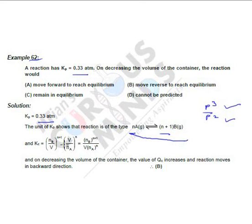So I will get the value as V by nA raised to n. Now I will manipulate it. So I will get the answer as nB raised to n+1 upon V, V into nA raised to n. So what we are seeing here - on decreasing the volume of container, if I decrease the volume of container, then the value of Qc increases.